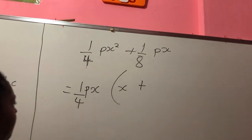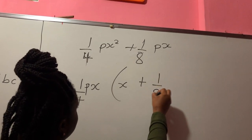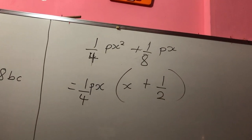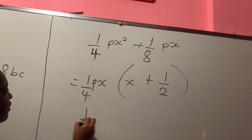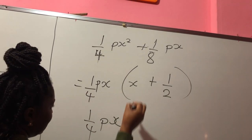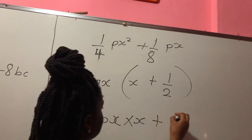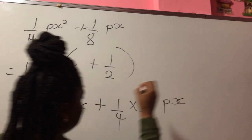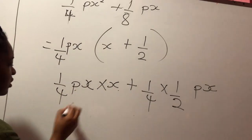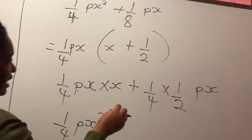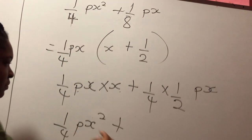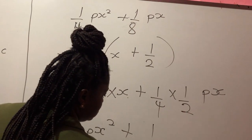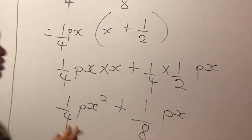Then the final term is going to be one-half, and the PX is already factored out so you don't have to bring it again. So what you have is: one-quarter PX times X plus one-quarter times one-half PX. One-quarter PX squared — plus, multiplying the fractions: 1 times 1 is 1, and 4 times 2 is 8 — so plus one-eighth PX. This is your answer, going back to the original question.